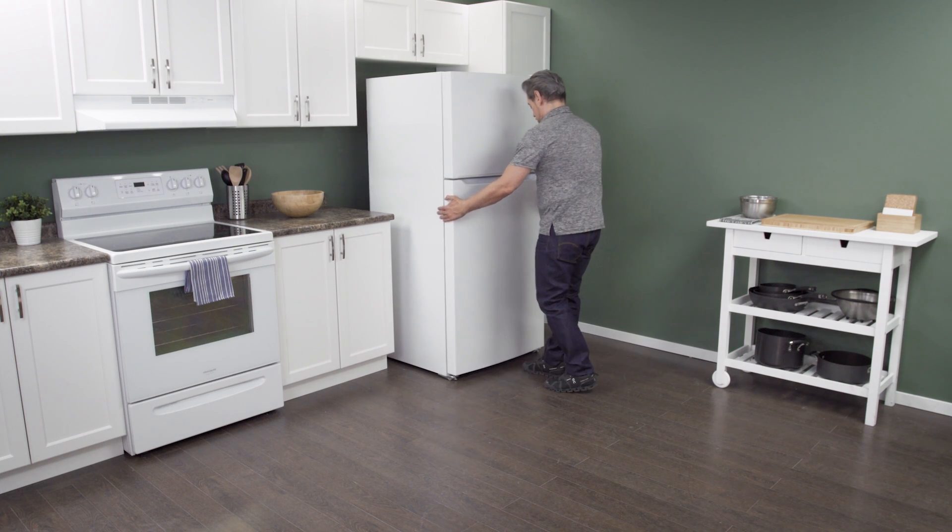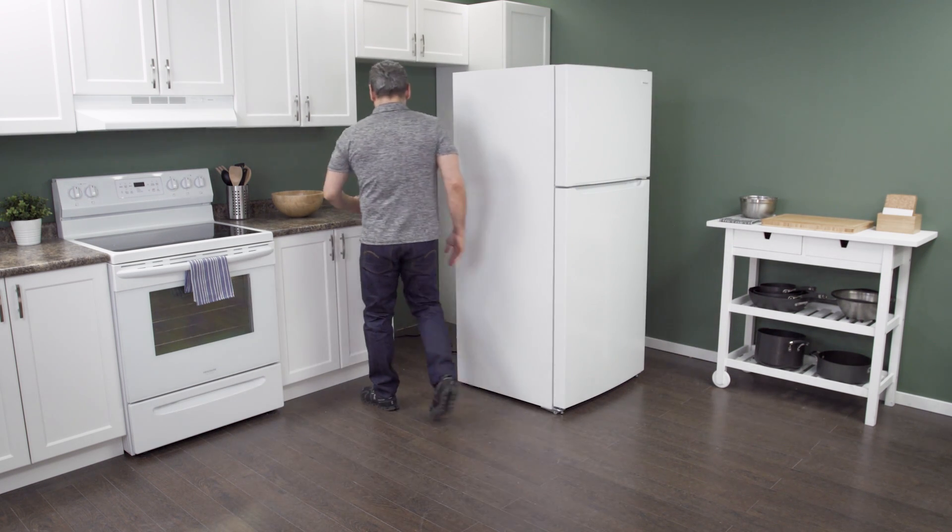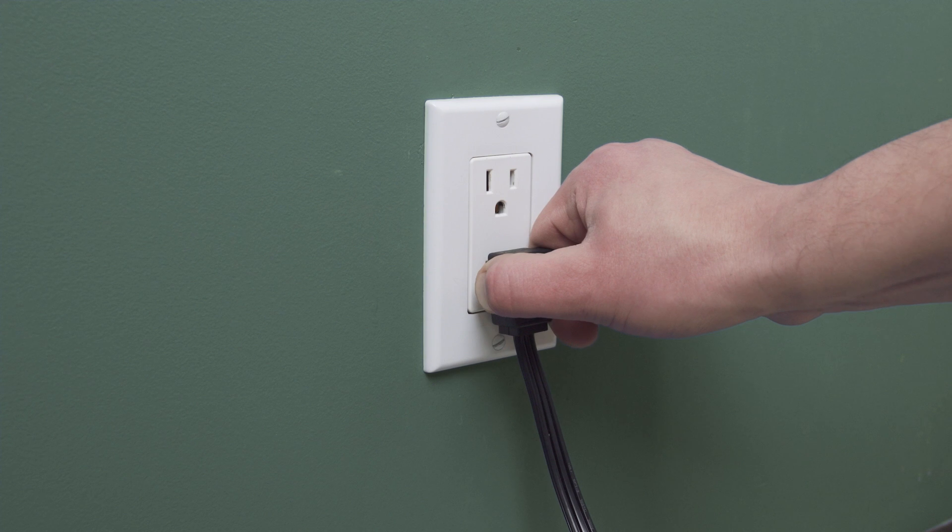First, slide the refrigerator out from the wall. When there is enough room, unplug the cord to disconnect the power.